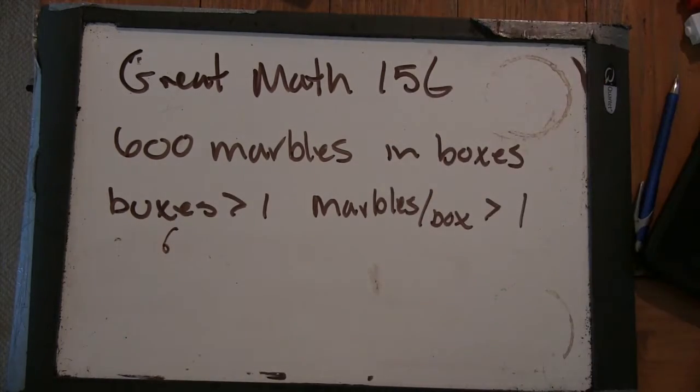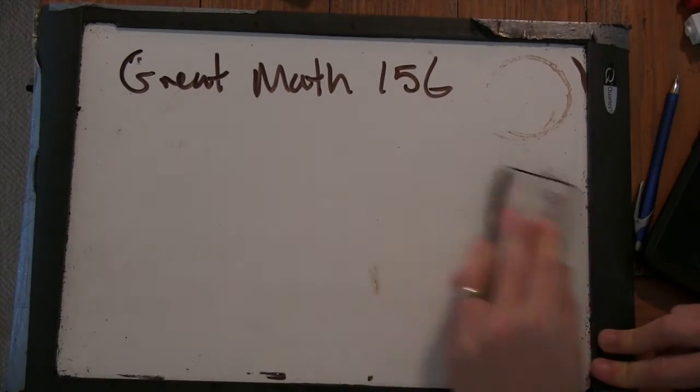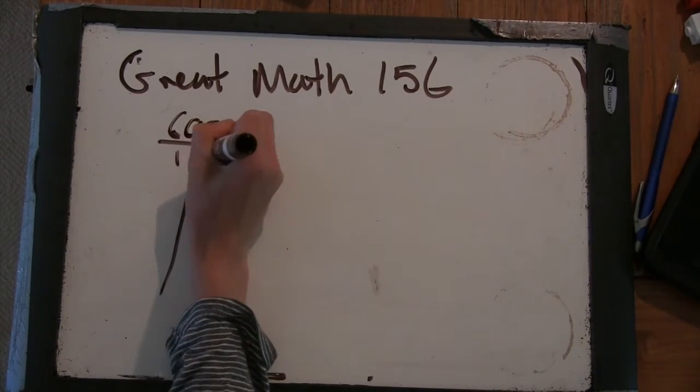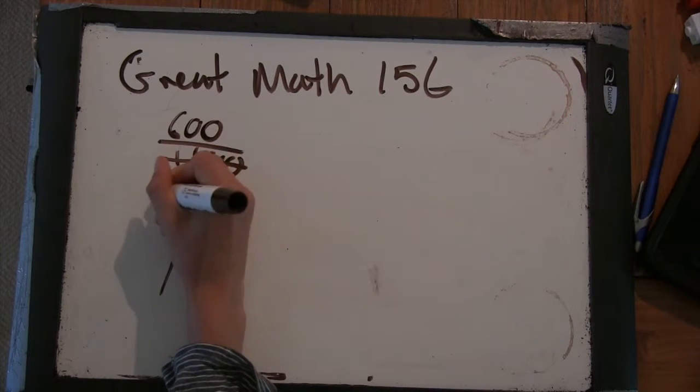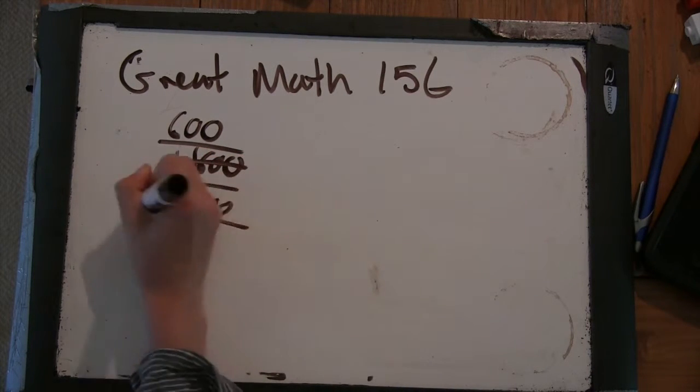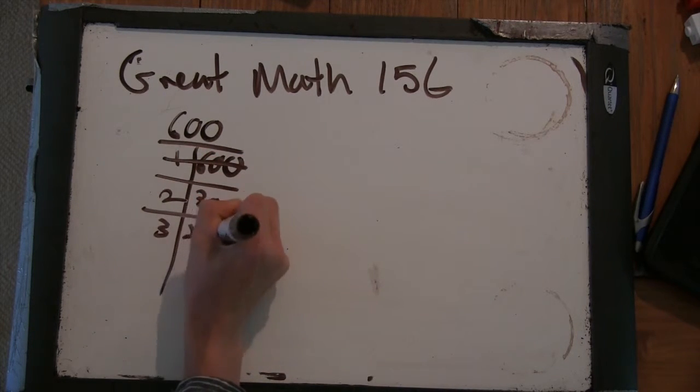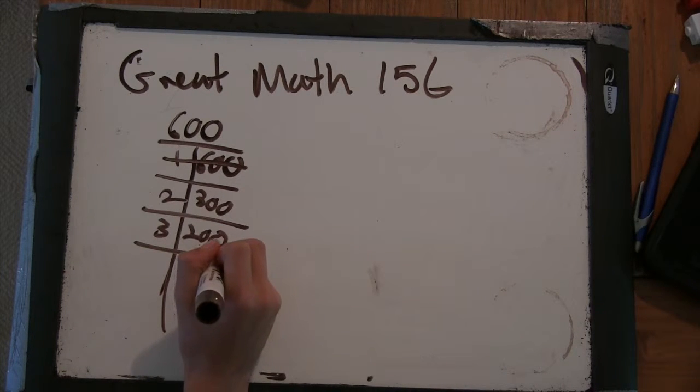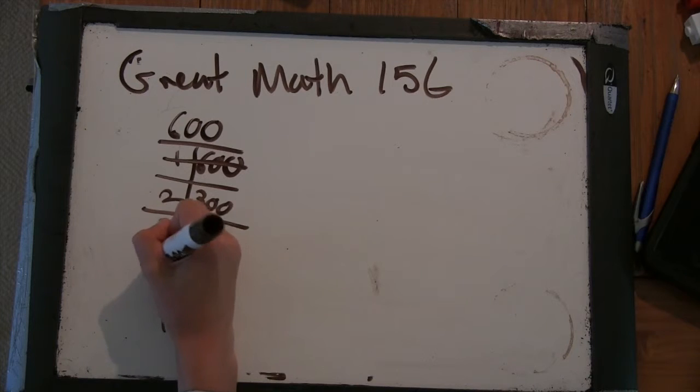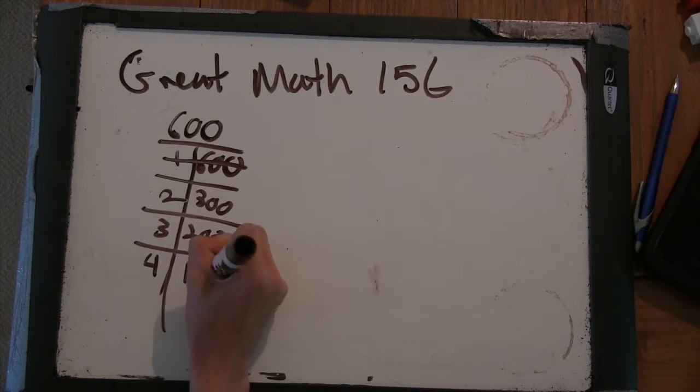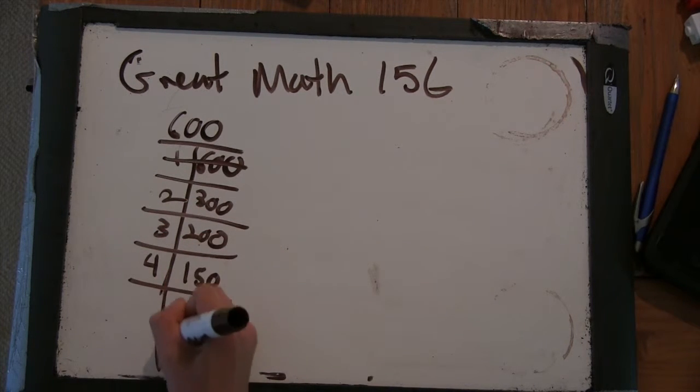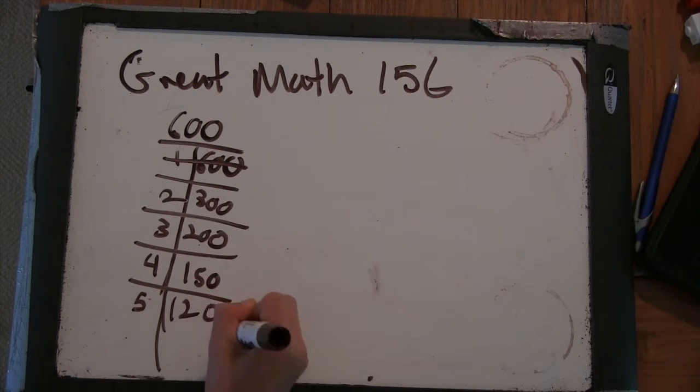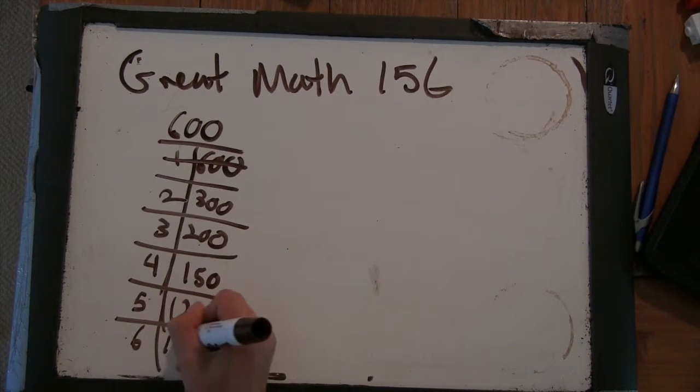I'll give you a little bit more room, because there might be a lot of divisors with 600. 1 and 600, that doesn't work. 2 and 300. 3 and 200. 4 and 150. 5 and 120. 6 and 100.